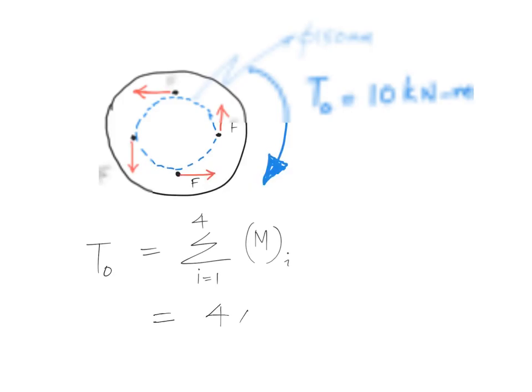The pitch circle diameter is 150 mm. We are calculating the moment about this point O.